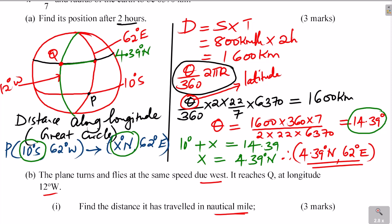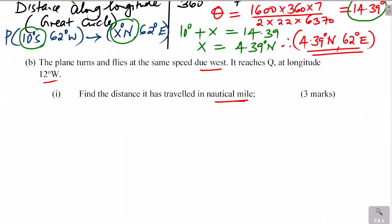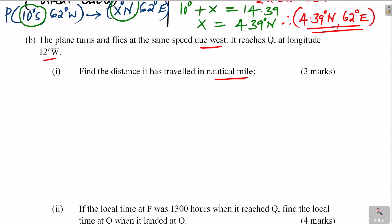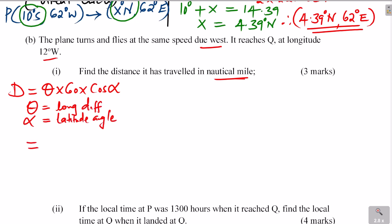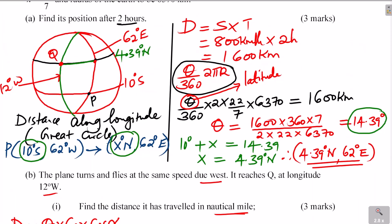There are two ways to find this distance. The first method calculates it directly in nautical miles using the formula: distance = θ × 60 × cos(α), where theta is the longitude difference and alpha is the latitude angle. The longitude difference: moving from 62 degrees east to 12 degrees west gives 62 + 12 = 74 degrees.